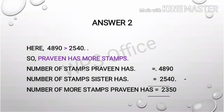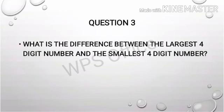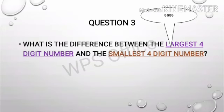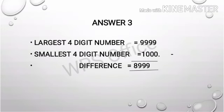Here the answer is given with statements. Praveen has more stamps. Subtracting the number of stamps sister has from Praveen's, you get 2,350 more stamps for Praveen. Next question: what is the difference between the largest four-digit number and the smallest four-digit number? The keyword here is 'difference,' and you should know that the largest four-digit number is 9,999 and the smallest four-digit number is 1,000. So you subtract: 9,999 minus 1,000, and your answer is 8,999.